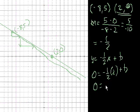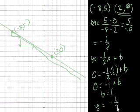Well, 0 is equal to, this is minus 1 plus b. And we get b equals 1. So this is a pretty easy problem. So now we get y is equal to minus 1 half x plus 1.